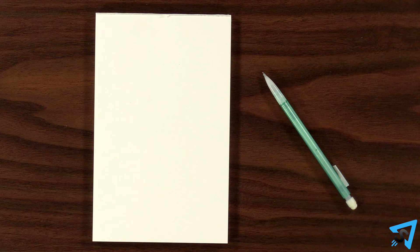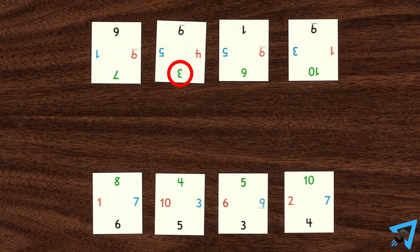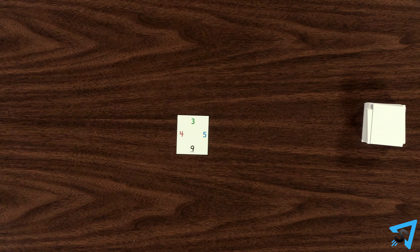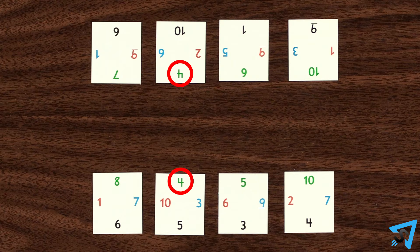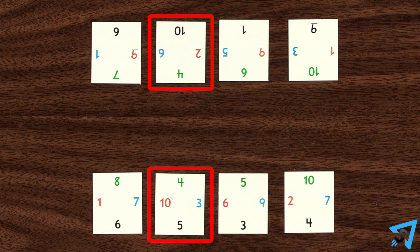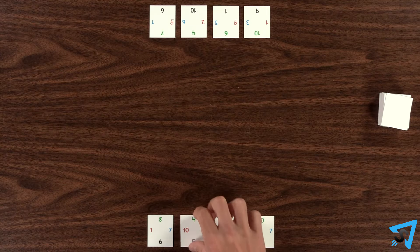Give each player paper and pencil for keeping their score. The player with the card that has the lowest green number goes first and places that card in the center of the table. If there is a tie, then of the tied cards, the one with the lowest blue number is placed first.